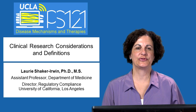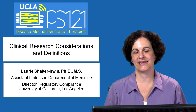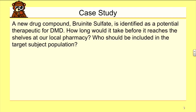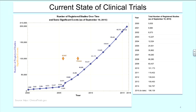Now we're ready to start with Module 2 on Clinical Research Considerations and Definitions. Here's an initial case study for you to consider. A new drug compound, bruinite sulfate, this is our investigational agent, is identified as a potential therapeutic for DMD. How long would it take before it reaches the shelves of the local pharmacy? And who should be included in the target subject population in our clinical trial? We'll take the answer to that case up a little bit later, but let's give you the foundation by providing some data about drug development.